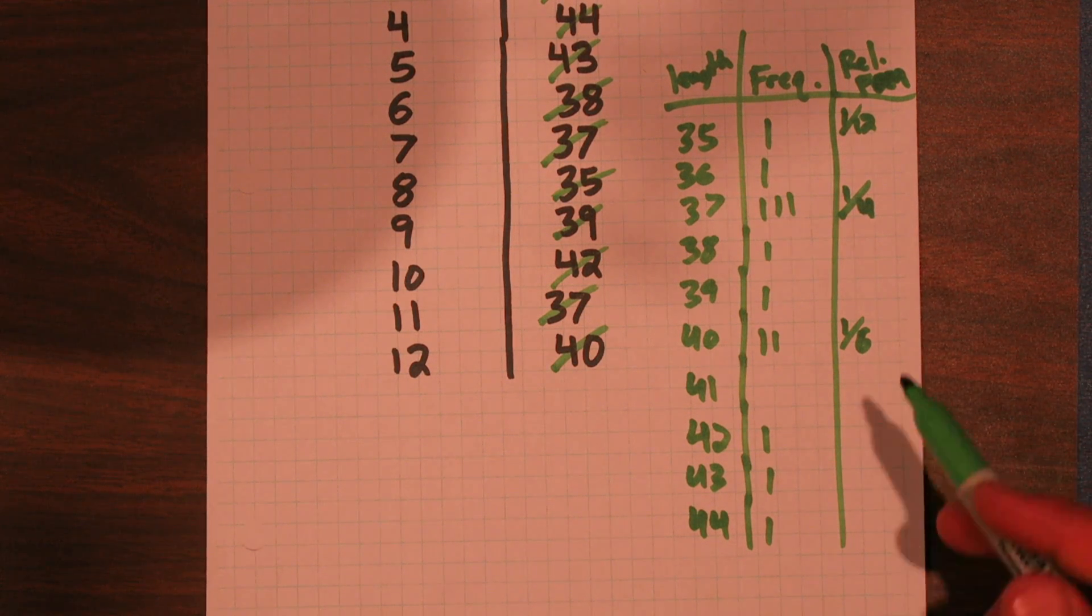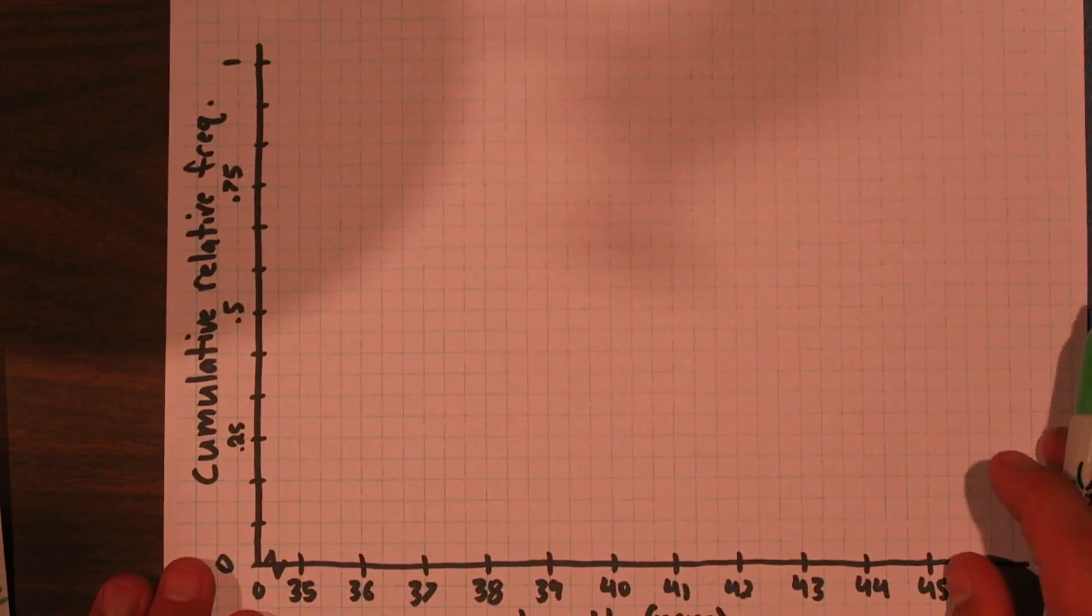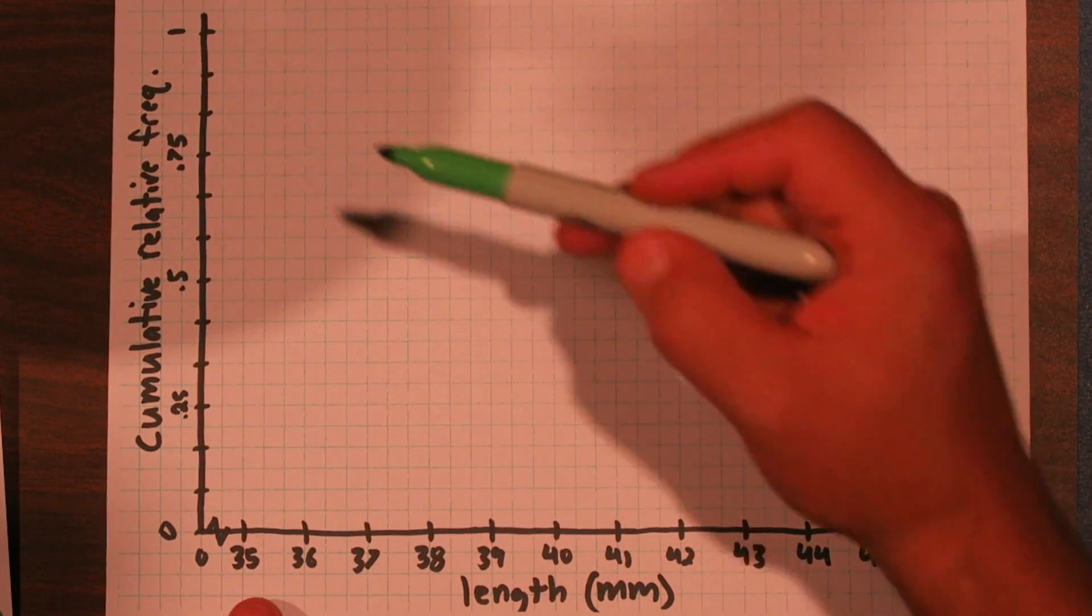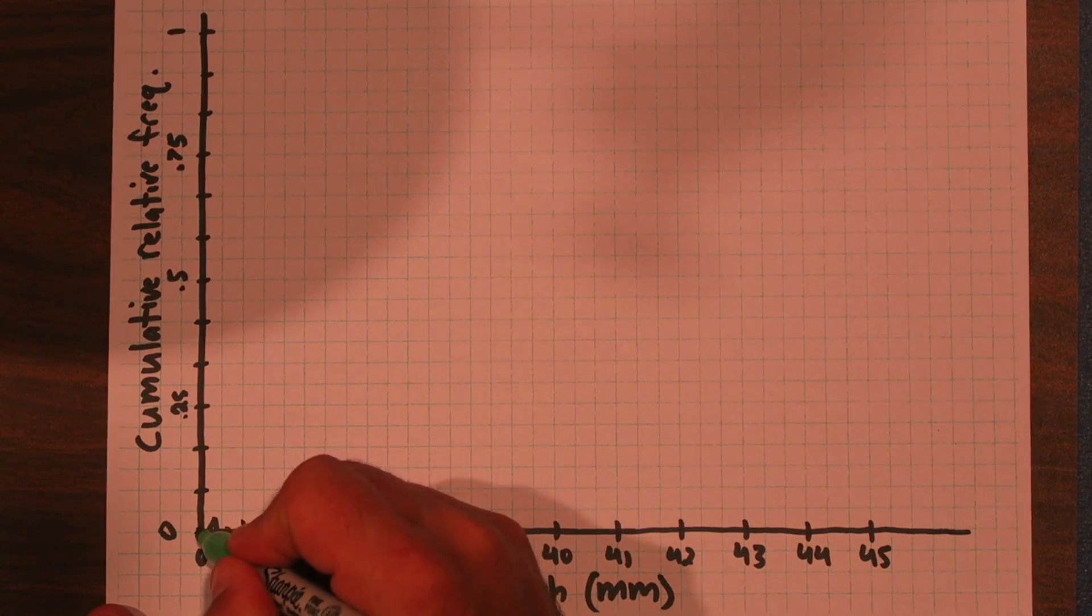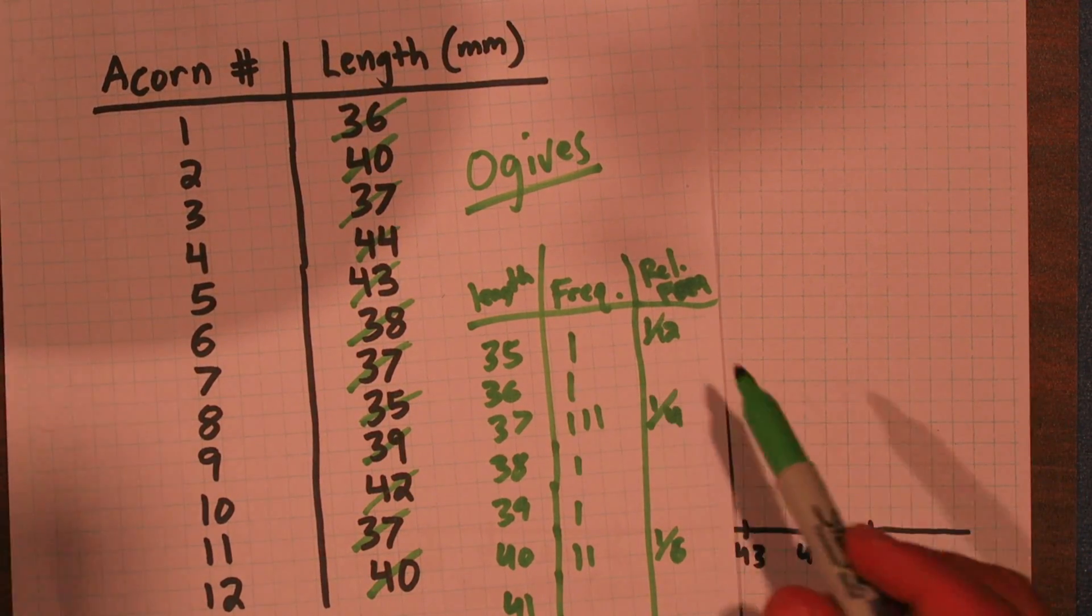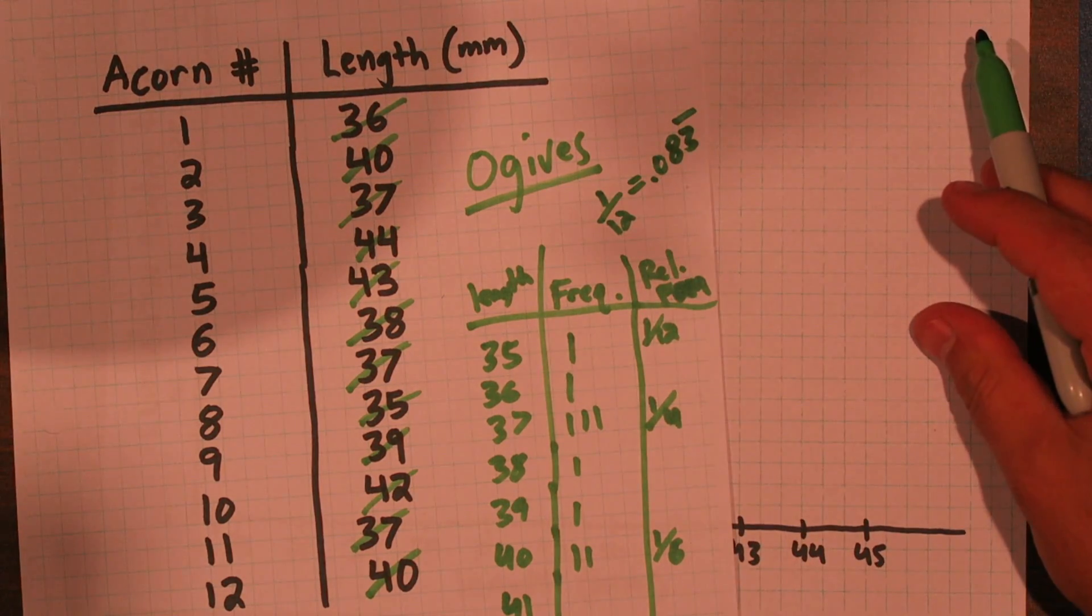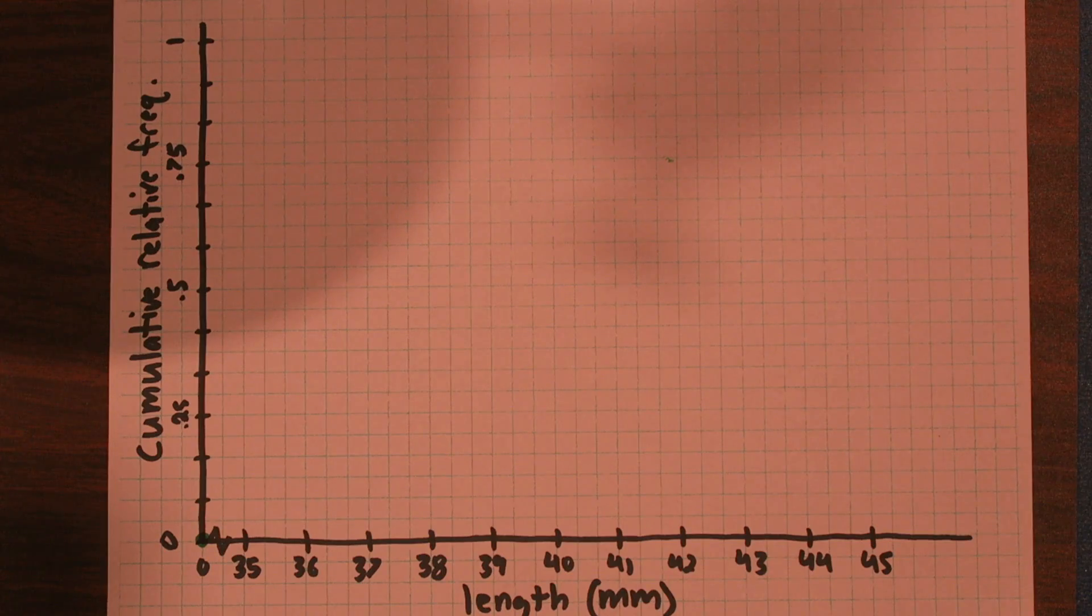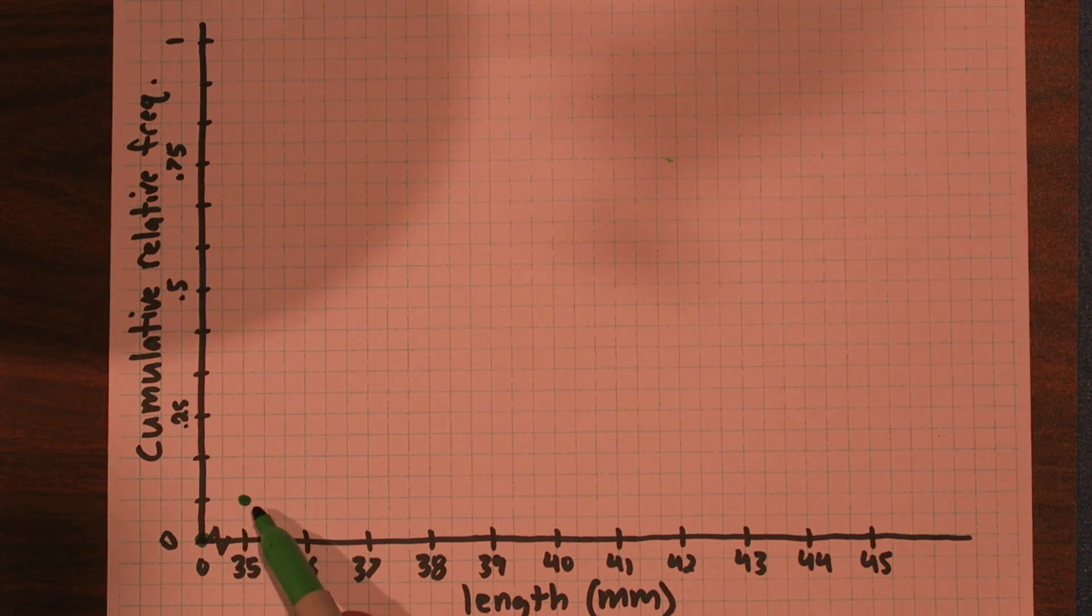We're going to take these relative frequencies and they're going to help us create our actual ogive. So I'm going to make one by hand first. I've set my axes up. I have my x-axis as length in millimeters. And then here is cumulative relative frequency. How many acorns were zero or less in length? None. I'm going to put a dot there. Now when we get to 35, 1 acorn or 1/12th of my acorns, which is about 8 and 1/3 repeating percent. I made my y-axis have exactly 12 tick marks, so it's going to make this easy. At 35, 1/12th of my acorns were 35 or less.